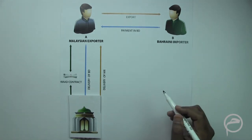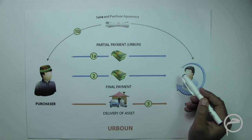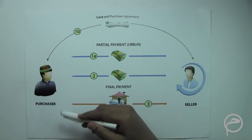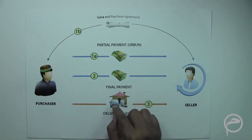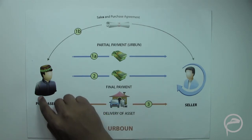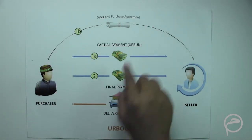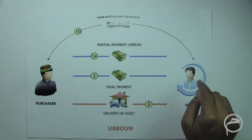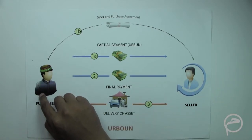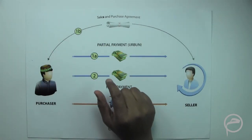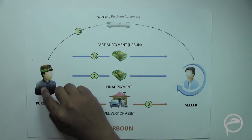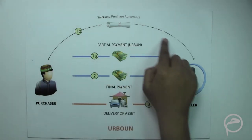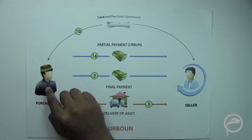This is basically how a wa'd-based currency swap works. Now, regarding an urboon contract: the purchaser has the option to purchase commodities at a locked-in price. For example, if the value of commodities is 100 dollars, the purchaser enters into an urboon contract with the seller and pays 10 dollars as an urboon amount. According to the contract, the purchaser has a time limit of three days to make a decision.